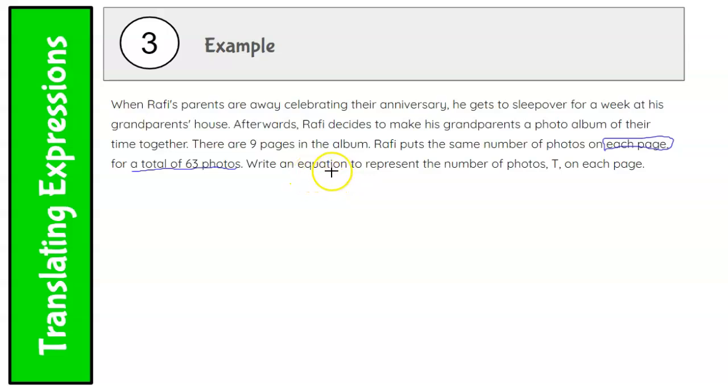Write an equation. Okay, so it's going to have an equal sign in it to represent the number of photos, T. So T is going to represent the number of photos that I don't know on each page. So there are nine pages. And each page has the same number of photos. So remember I said each was multiplication. And I'm going to put the dreaded x there just to help me remember. It's going to be a total of 63.